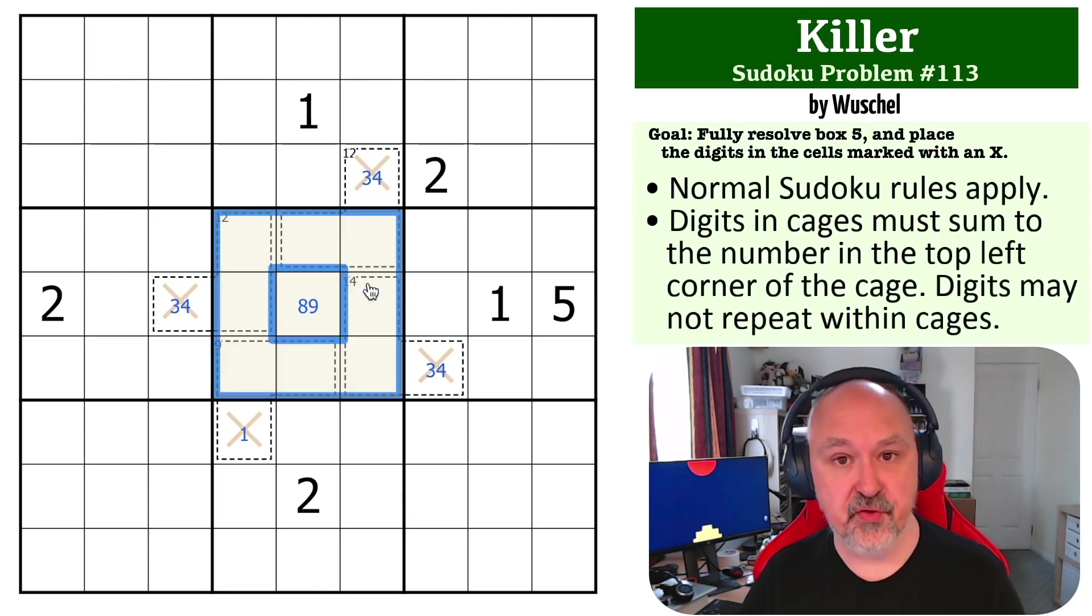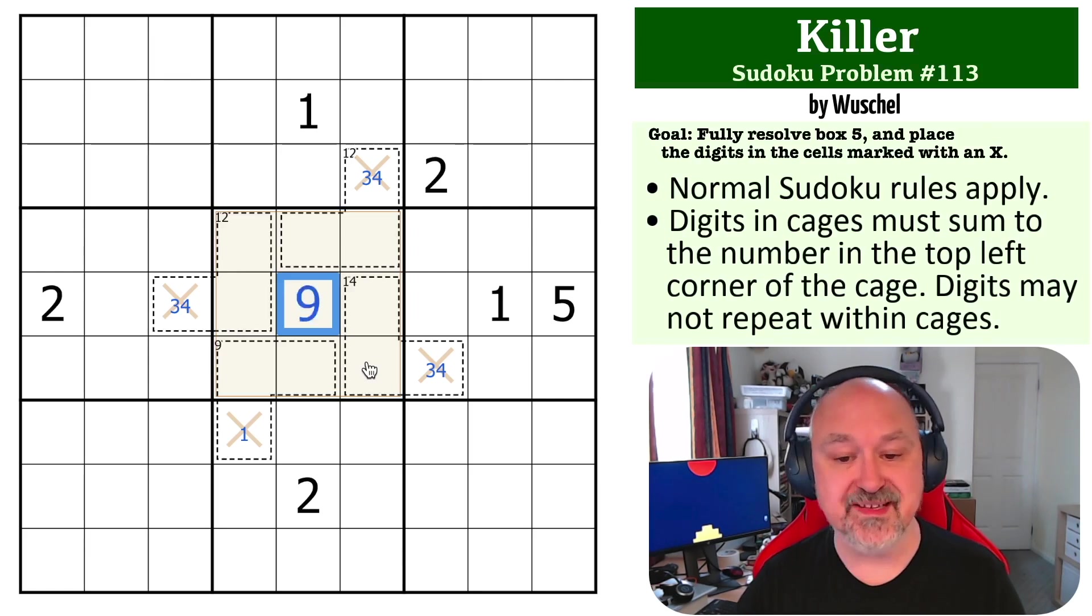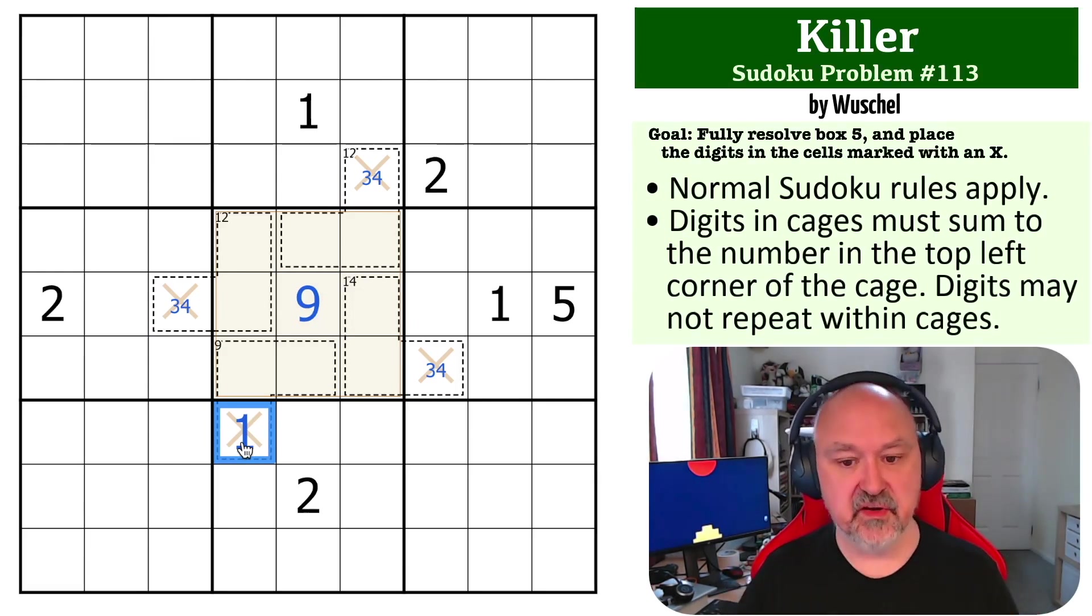Once we subtract 11 from the 47, we've got 36, and this must make up the difference, which means this must be a 9. And we've got two threes and a four, and this must be a 1. We've automatically got that. Well, automatically, that's something that you can figure out if you look.